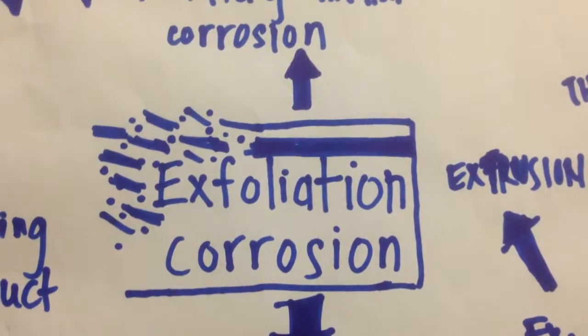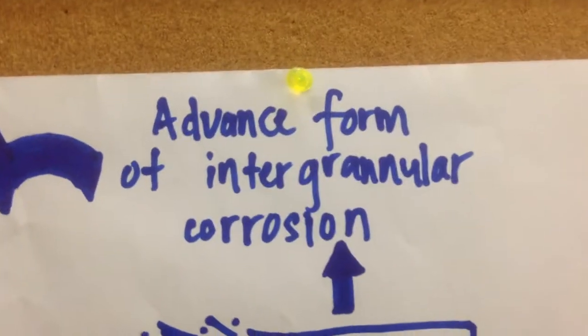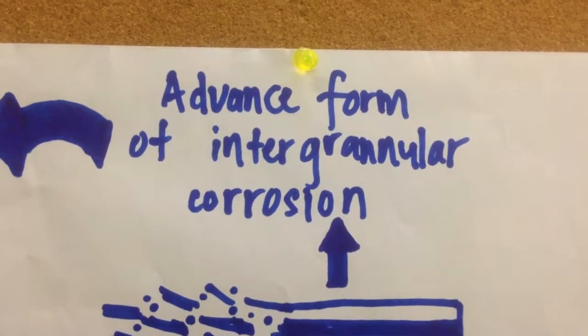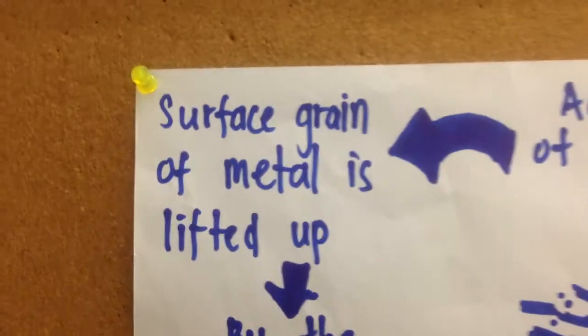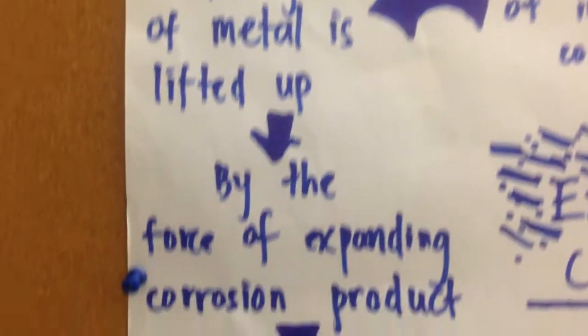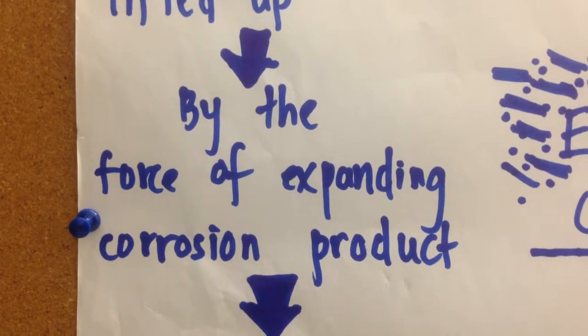What is exfoliation corrosion? Exfoliation corrosion is an advanced form of intergranular corrosion where the surface grain of metal is lifted up by the force of expanding corrosion product.